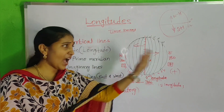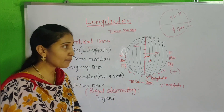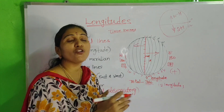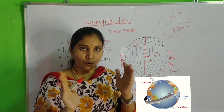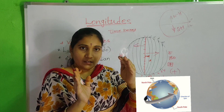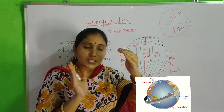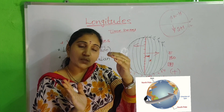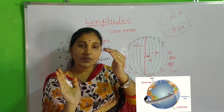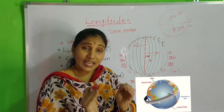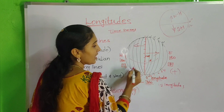Why do we add towards the East and deduct towards the West? Because it is based on the direction of the Earth's rotation. The Sun is a static body — it will not move. But the Earth moves, and the direction of the Earth's movement is from West to East.